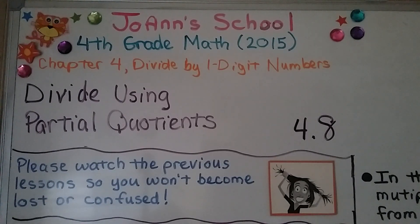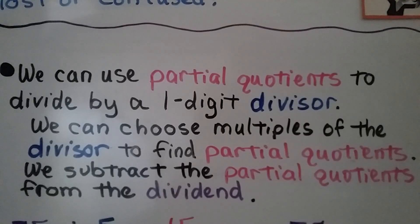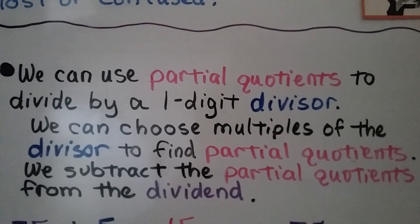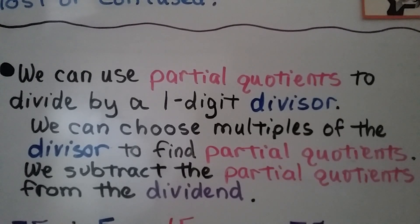Lesson 4.8: Divide Using Partial Quotients. We can use partial quotients to divide by a one-digit divisor. We can choose multiples of the divisor to find partial quotients. We subtract the partial quotients from the dividend.